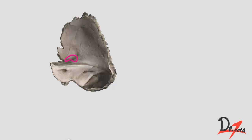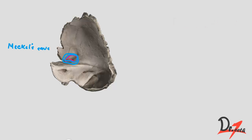Looking at the inside surface of the temporal bone, we can see the petrous temporal bone and the trigeminal fossa, in which the trigeminal ganglion is present. The trigeminal ganglion is semi-lunar in shape. It is covered by a double fold of dura mater, and this forms the trigeminal cave, also called Meckel's cave.